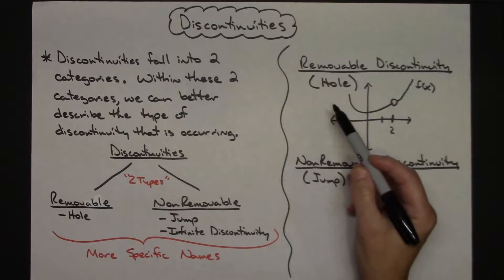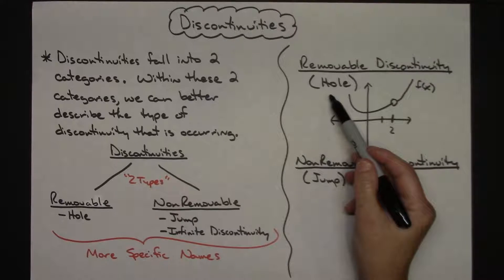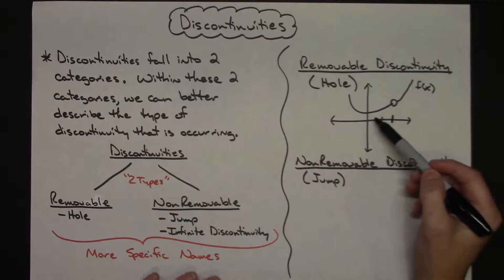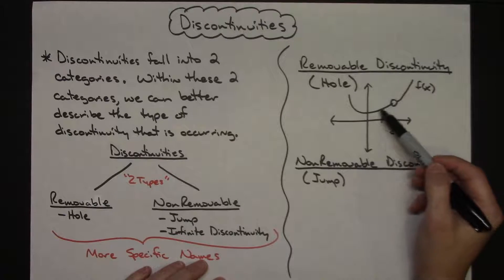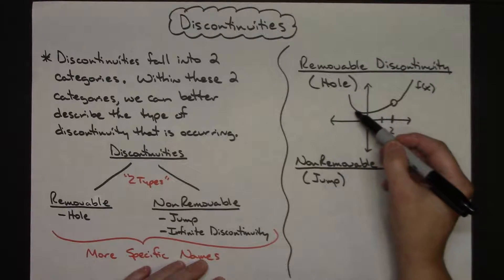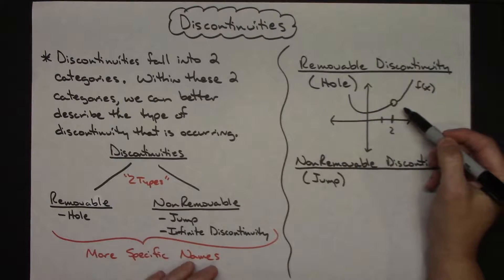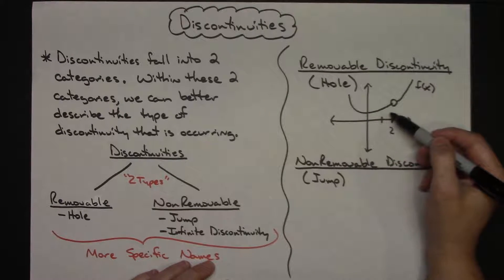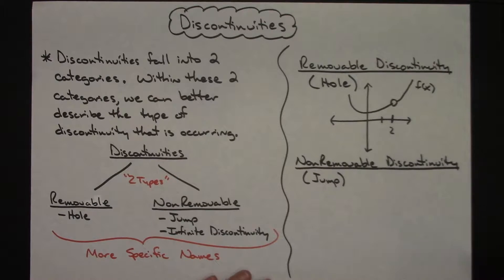A discontinuity is specific to a location on the graph. A helpful way to identify a hole is to think of it like a hole in a road — if it can be filled or patched and then makes the function continuous (the road would be fixed), then it is a removable discontinuity.